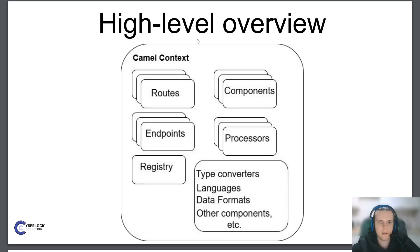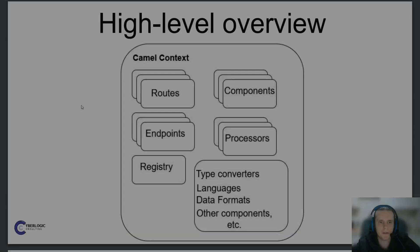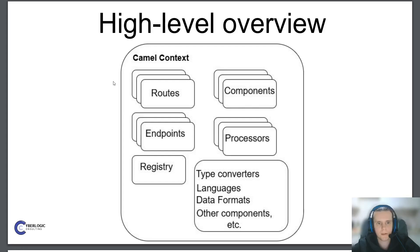In this video we will discuss CamelContext, routes, components, endpoints, and processors, as these are the most important parts of Camel's architecture. Other entities such as registry, type converters, and languages will be discussed in future videos. Let's start our overview with CamelContext, as it is the most important part of the Apache Camel framework — a runtime which makes all these entities work together.